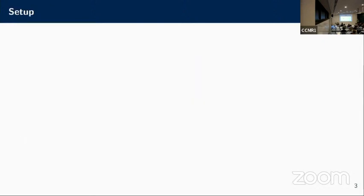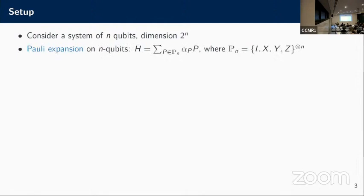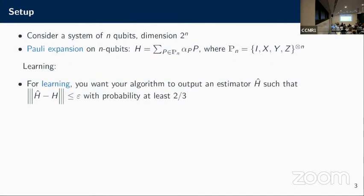What's our setup? We consider a system of n qubits, dimension 2 to the n. Since we're talking about qubits, it's convenient to do the standard thing: take the Hamiltonian and write it down as an expansion in terms of Pauli strings. So these p's are strings of Paulis where each entry is either identity, x, y, or z. These coefficients alpha_p are real numbers. This is what you would like to learn if you do learning. For learning, you would want your algorithm to output an estimator H hat or alpha hat such that some norm, which is your figure of merit, the distance of the estimator to the actual Hamiltonian is at most epsilon with probability at least two thirds. That's the standard learning, but that's not what we're doing.